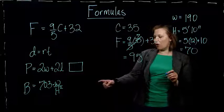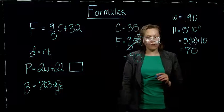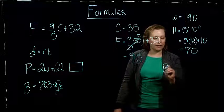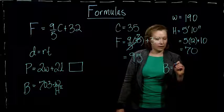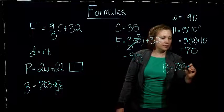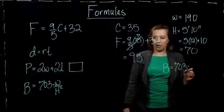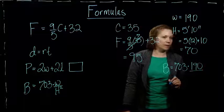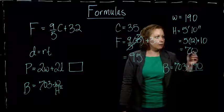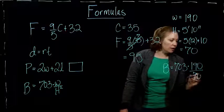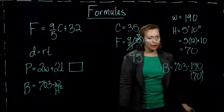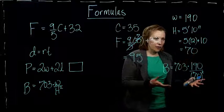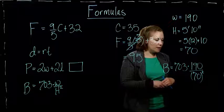So, that means all I need to do is plug into my formula here to get the body mass index. B equals 703 times my weight of 190 divided by the height, which we said was 70 inches, and then that has to be squared. So, now all we have to do is evaluate this using what we know about arithmetic.